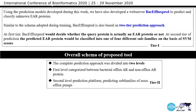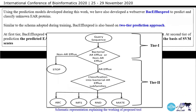We have implemented a web server and a standalone tool. This is the overall schema of the proposed tool. If the user submits a sequence, in Tier 1 it will decide whether it is a bacterial antibiotic resistance efflux protein or non-efflux. If it is non-efflux, it will stop immediately. If it is an AR efflux protein, it will proceed further and be classified into various sub-families in Tier 2.